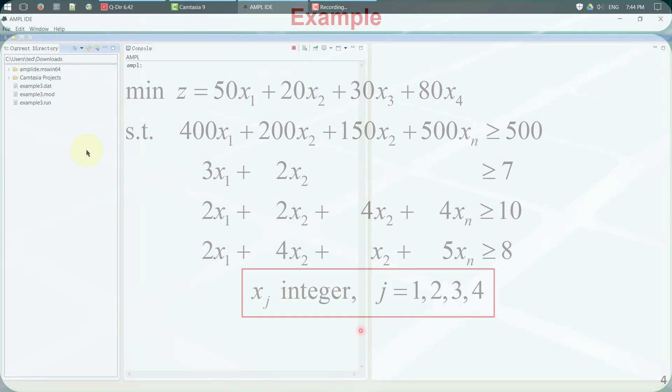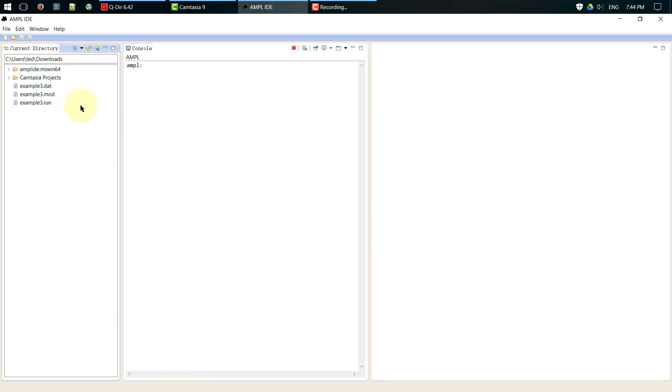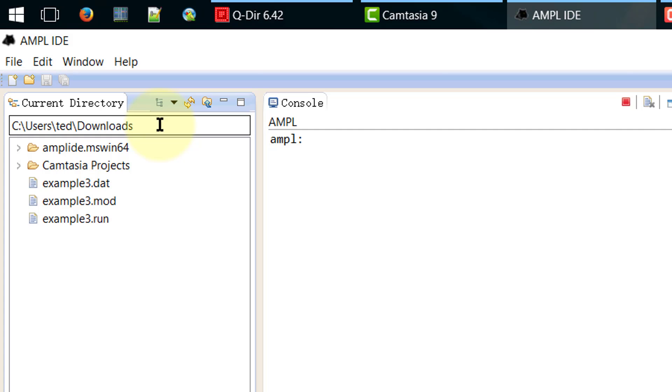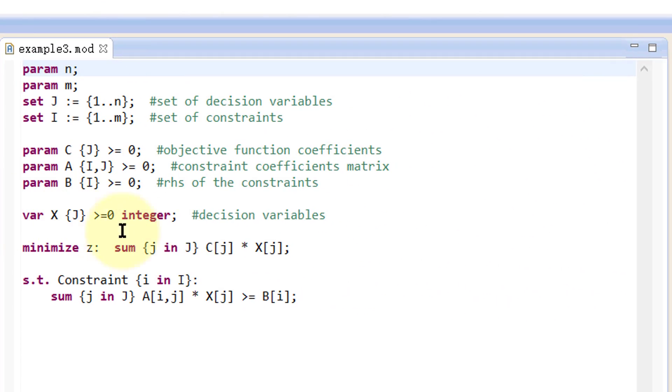Let's start the AMPL IDE. You need to change the current directory to the folder that contains the downloaded files. Now open the model file example3.mod by a double click. The only difference between this model and the previous model is that we add a keyword integer just before the ending semicolon.